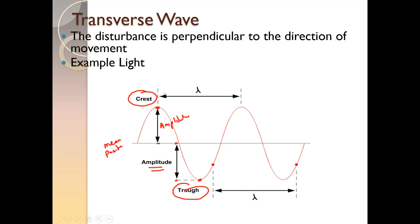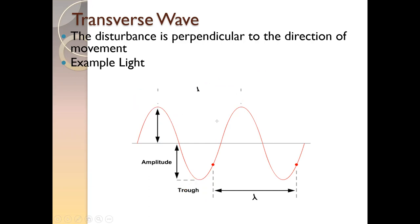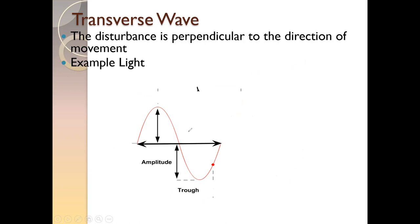The distance between two successive crests — this is one crest and this is the other crest — is called the wavelength. It is the length of the wave, denoted by the Greek alphabet lambda. This is known as wavelength, or the length of the wave. Similarly, the length of one complete wave — one complete crest and one complete trough — is also known as wavelength.